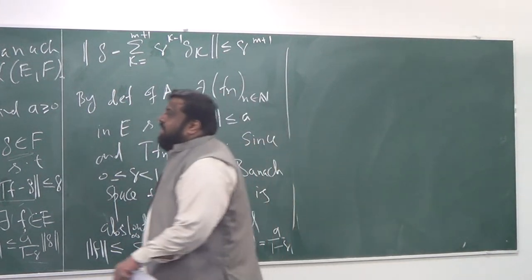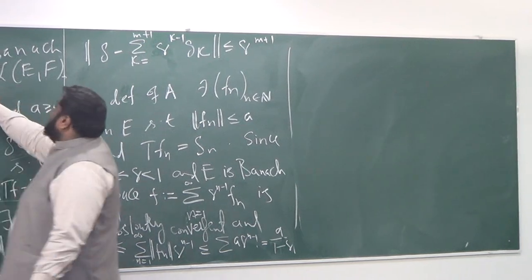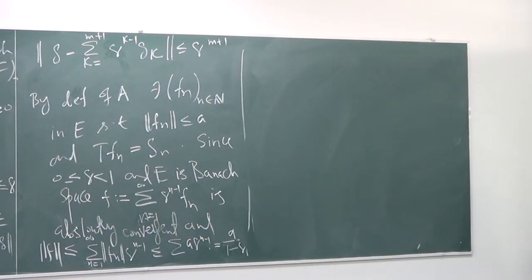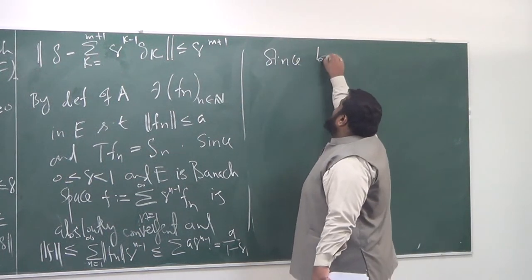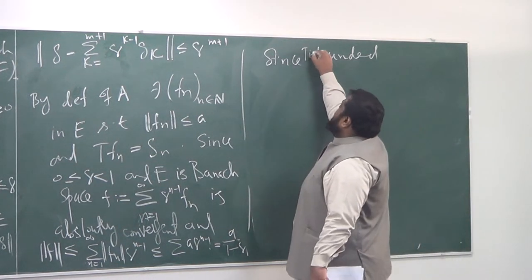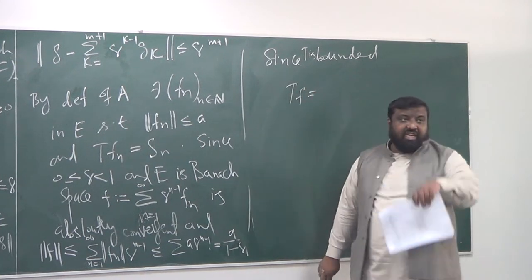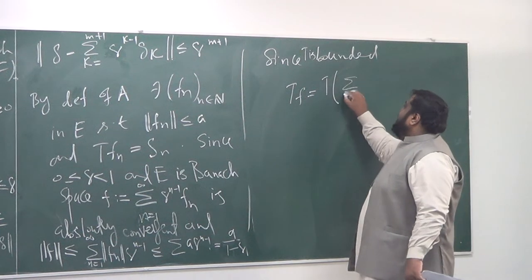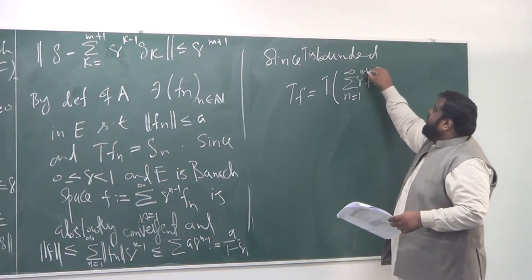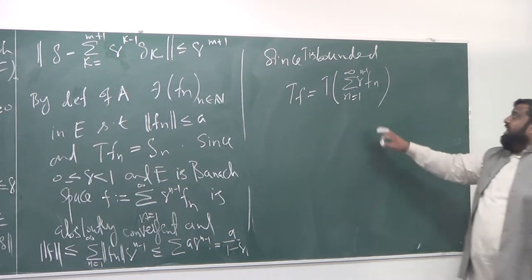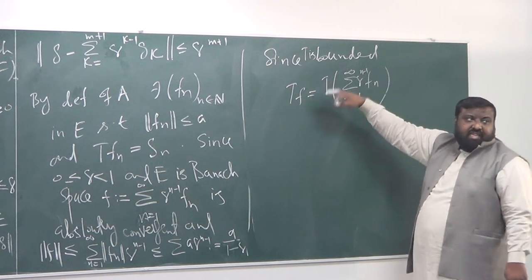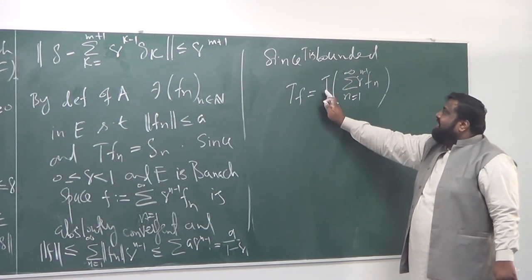Up to this point, I haven't used the boundedness of T or the linearity of T. I've used the other hypotheses, but not boundedness. So since T is bounded, I can write — giving the final stroke — that Tf equals T times the sum from n equals 1 to infinity of F_n times Q raised to n minus 1. And since T is bounded, I can take T inside the sum by exchanging the limit and T.